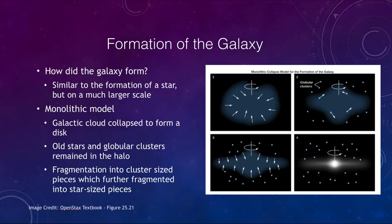So what does this tell us about the formation of our galaxy? How did the galaxy form in the first place? Is it similar to the formation of a star but on a much larger scale? That is one way of thinking about it, and essentially this is what we call the monolithic model.